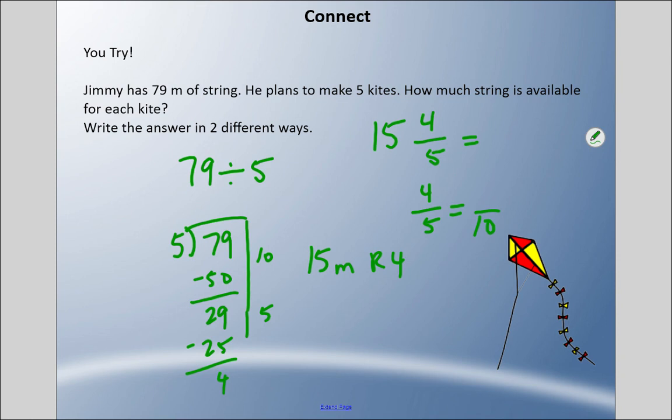So another way we could write this is eight-tenths. We could also say - let me use a different color - 15 and eight-tenths of a meter for each kite.